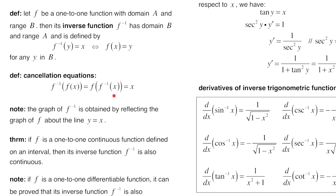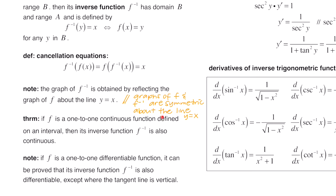The graph of f inverse is obtained by reflecting the graph of f about the line y equals x, so the graphs of f and f inverse are symmetric about y equals x. A theorem states: if f is a one-to-one continuous function defined on an interval, then its inverse function f inverse is also continuous. And if f is a one-to-one differentiable function, it can be proved that its inverse function is also differentiable, except where the tangent line might be vertical.